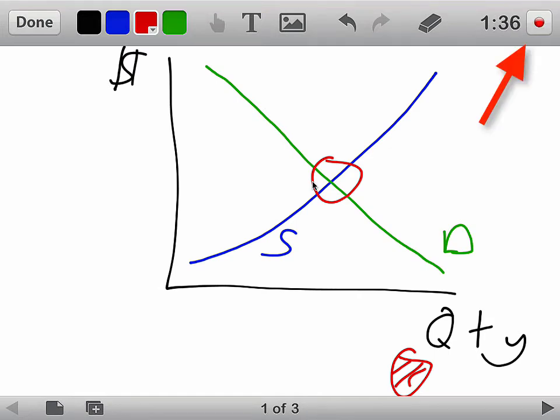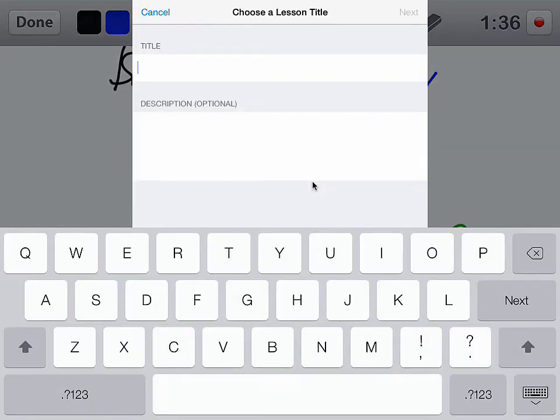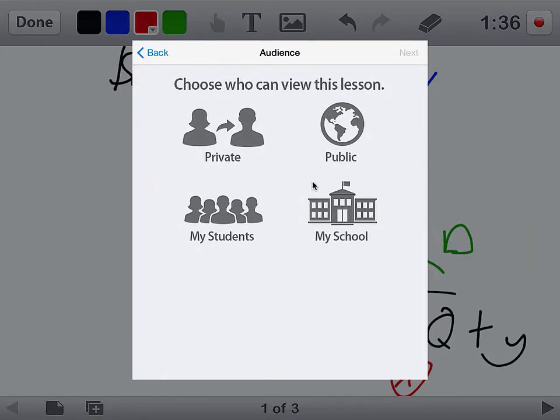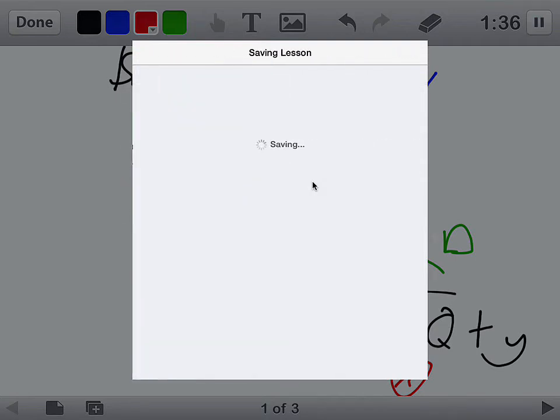So I'm going to hit pause. Let's say that is all I wanted to share with my students, I end up sharing that with them a lot. I'm just going to hit done and hit save lesson and I can just name it supply demand curve, next, and right now I'm just going to choose private and I'm just going to save it.